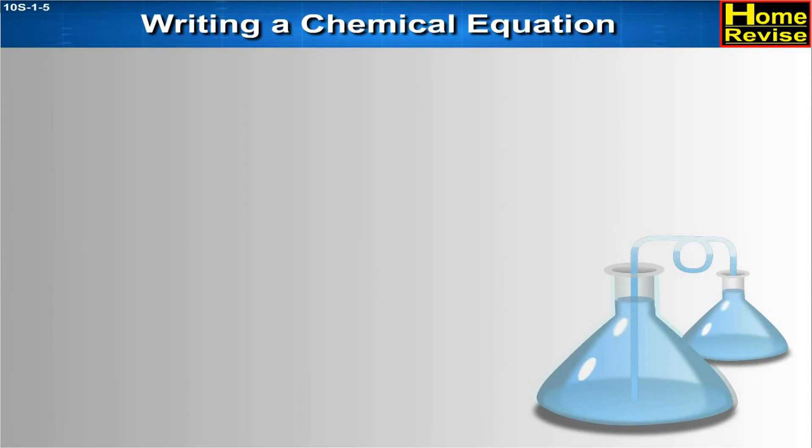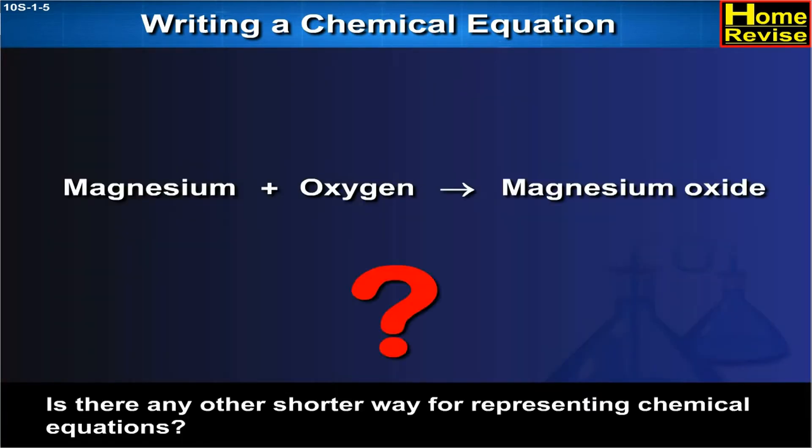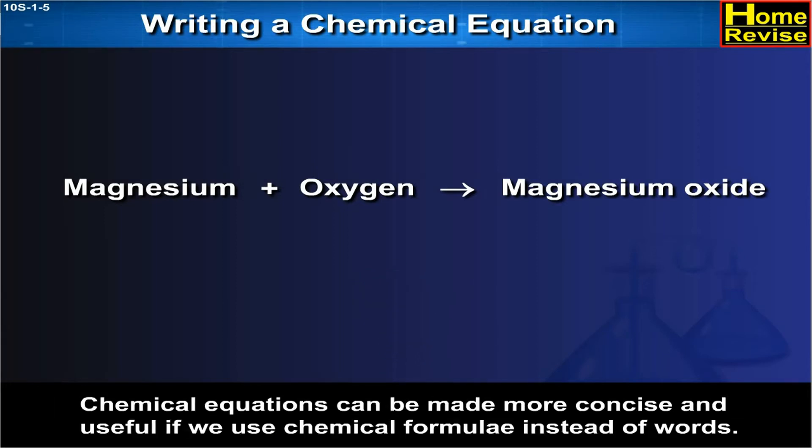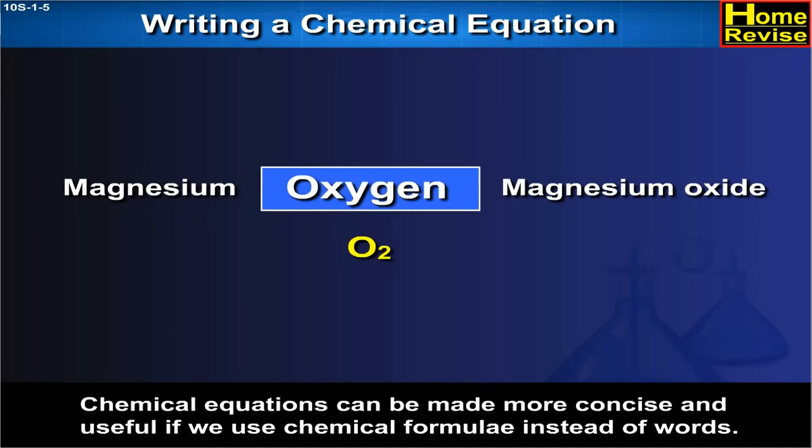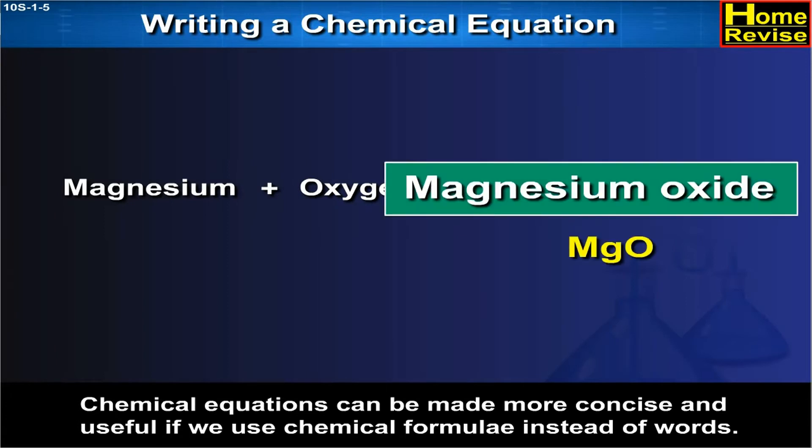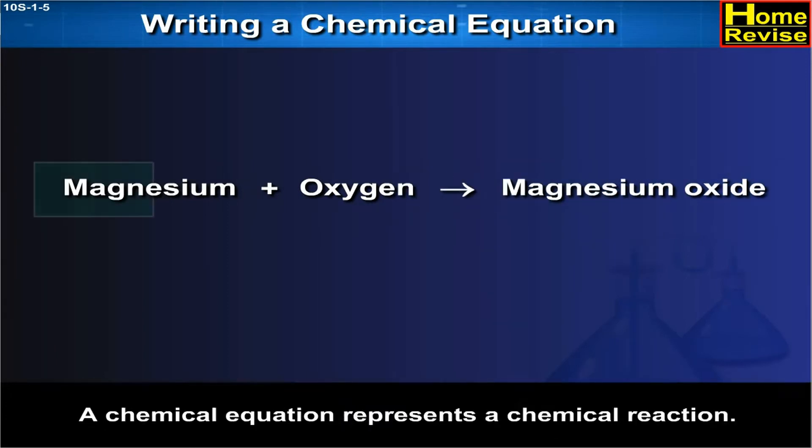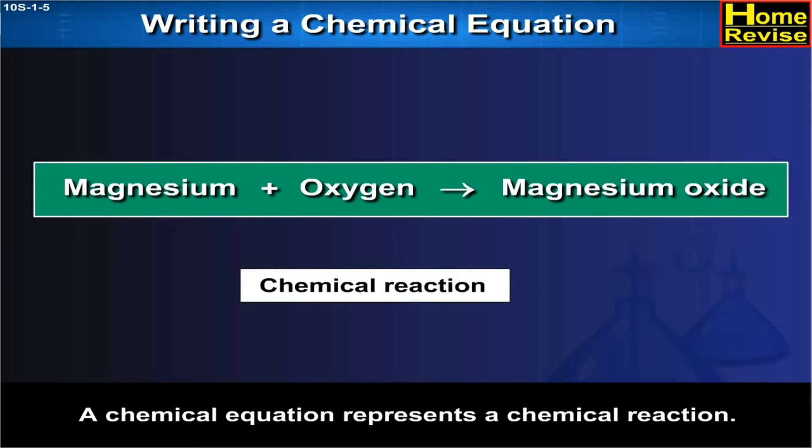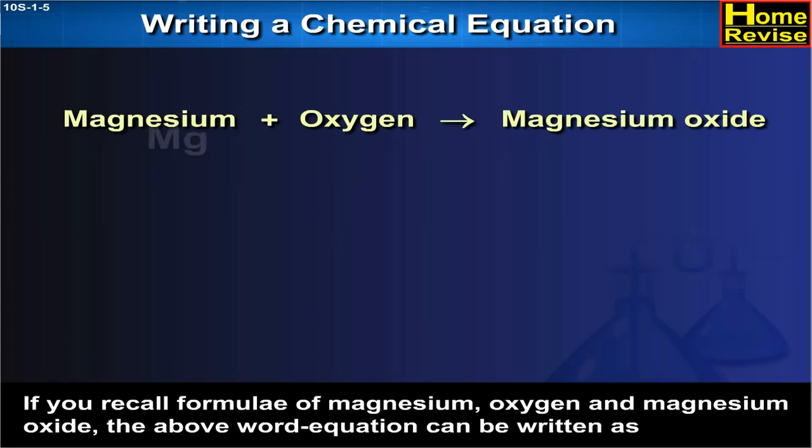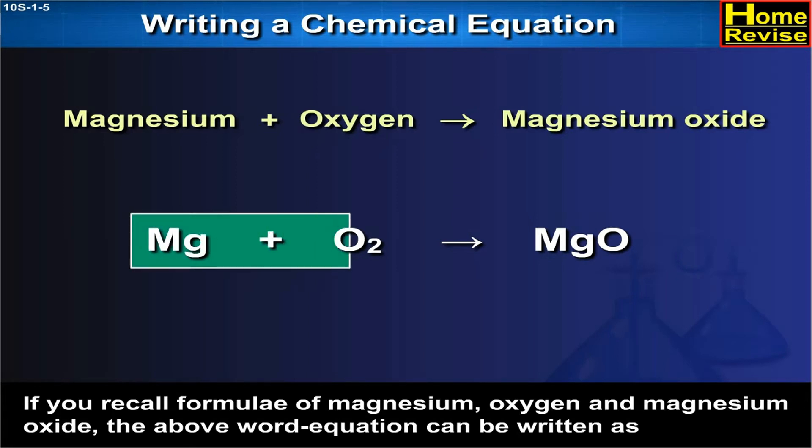Writing a chemical equation. Is there any other shorter way for representing chemical equations? Chemical equations can be made more concise and useful if we use chemical formulae instead of words. A chemical equation represents a chemical reaction. If you recall, formulae of magnesium, oxygen and magnesium oxide, the above word equation can be written as Mg plus O2 gives MgO.